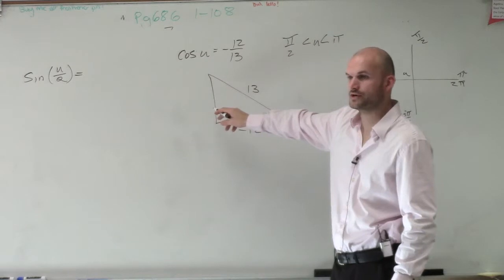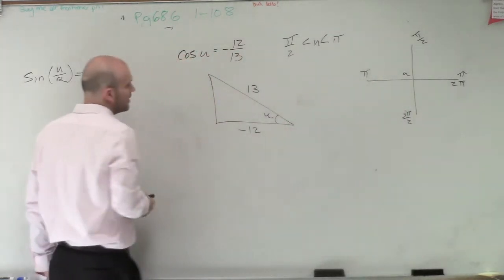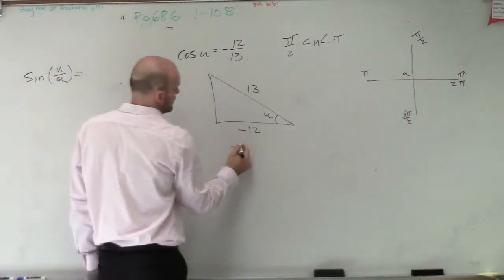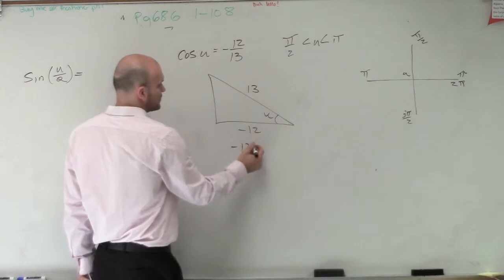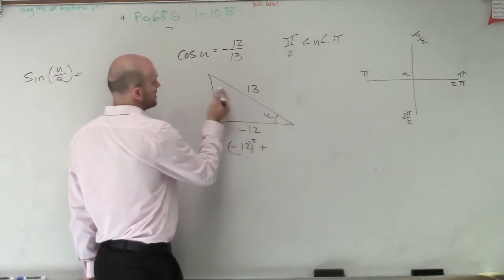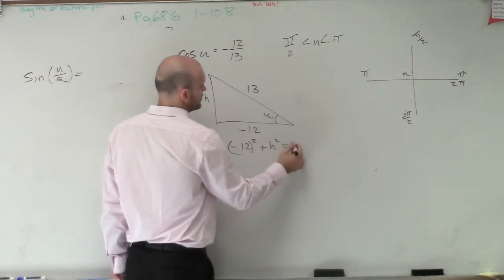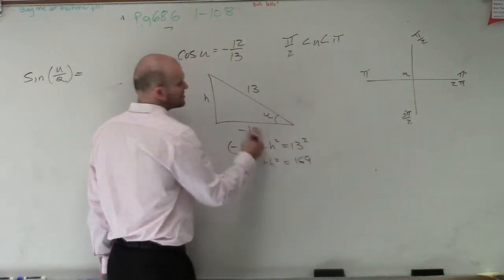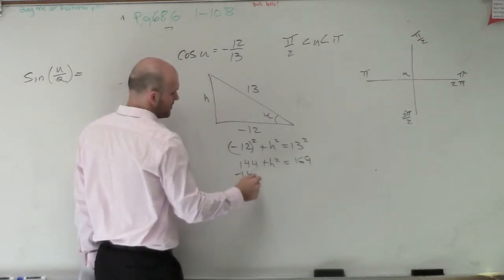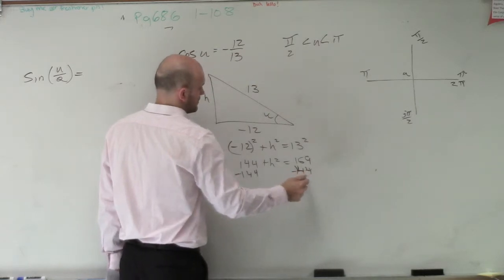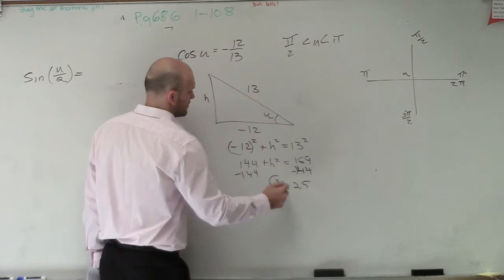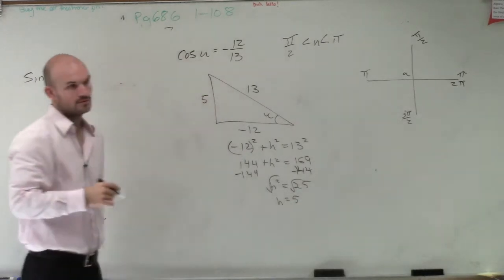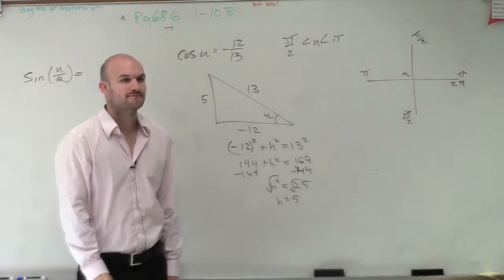We can figure out this value by using Pythagorean theorem. So by using Pythagorean theorem, we'd have negative 12 squared plus, let's call this h. h squared equals 13 squared. So this is 144 plus h squared equals 13 squared, which is 169. This is also a Pythagorean triple, so you guys should know the answer's already 5, but we'll solve it out. Therefore, h squared equals 25, h equals 5. Because it's a Pythagorean triple.